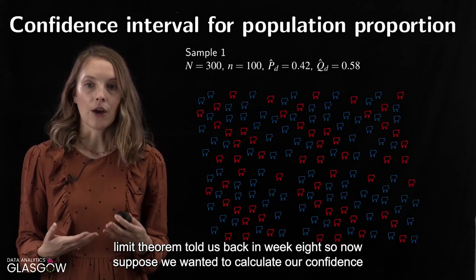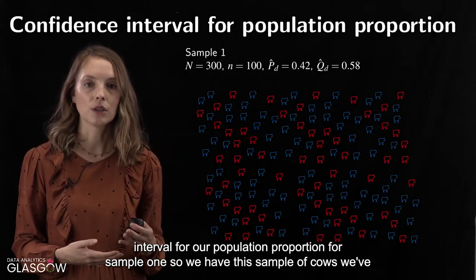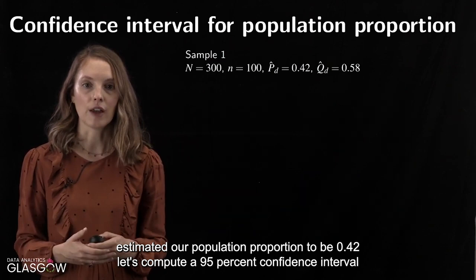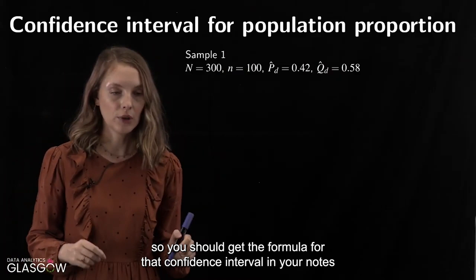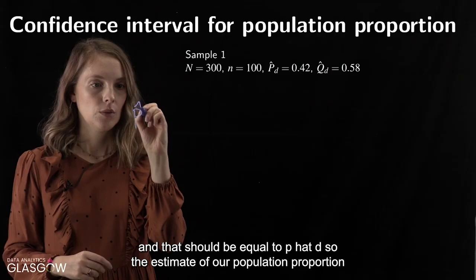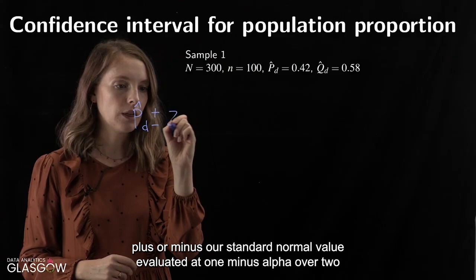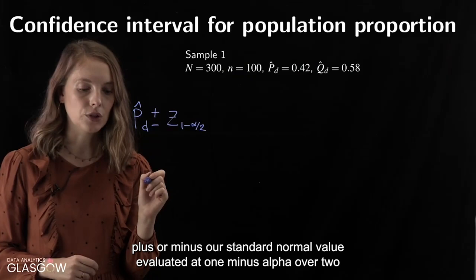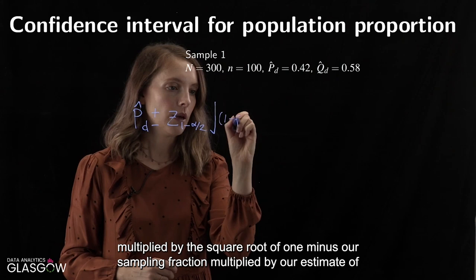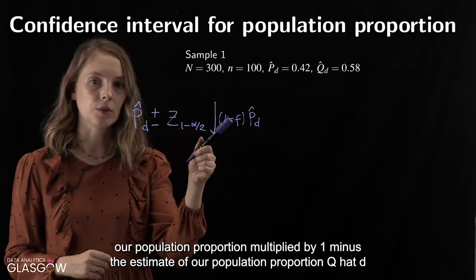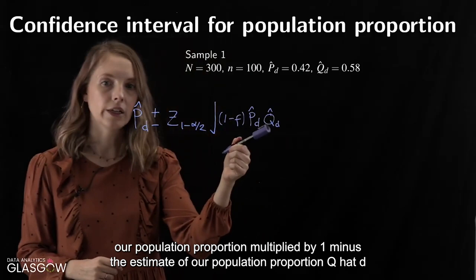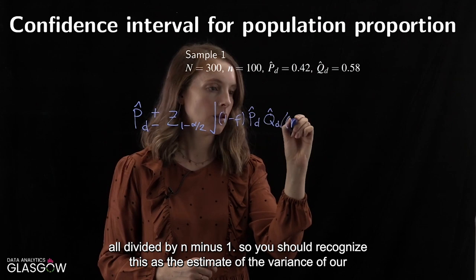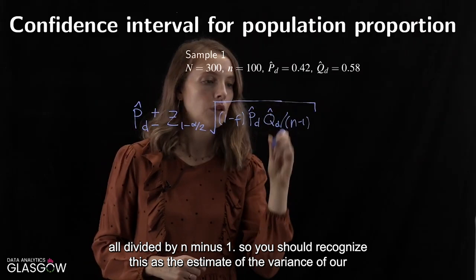Now suppose we want to calculate the confidence interval for sample one, where we estimated the population proportion as 0.42. The formula for a 95% confidence interval is: P̂D ± z(1 − α/2) × √[(1 − sampling fraction) × P̂D × Q̂D / (n − 1)]. You'll recognize that expression under the square root as the variance of the population proportion we computed earlier, and we have all the information needed.